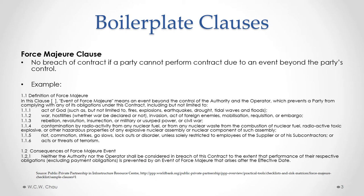Here is an example of a force majeure clause. In paragraph 1.1, you can see all the different events that are considered to be an event of force majeure, including acts of God — which would also include a drought, a tidal wave, a flood — as well as war, acts of foreign enemies, embargo, rebellion, revolution, civil war, radioactive contamination, nuclear waste, and acts or threats of terrorism. All kinds of horrible things that are outside the party's control. If one of those things happens and a party can't perform the contract, that's okay — it's not a breach of contract.